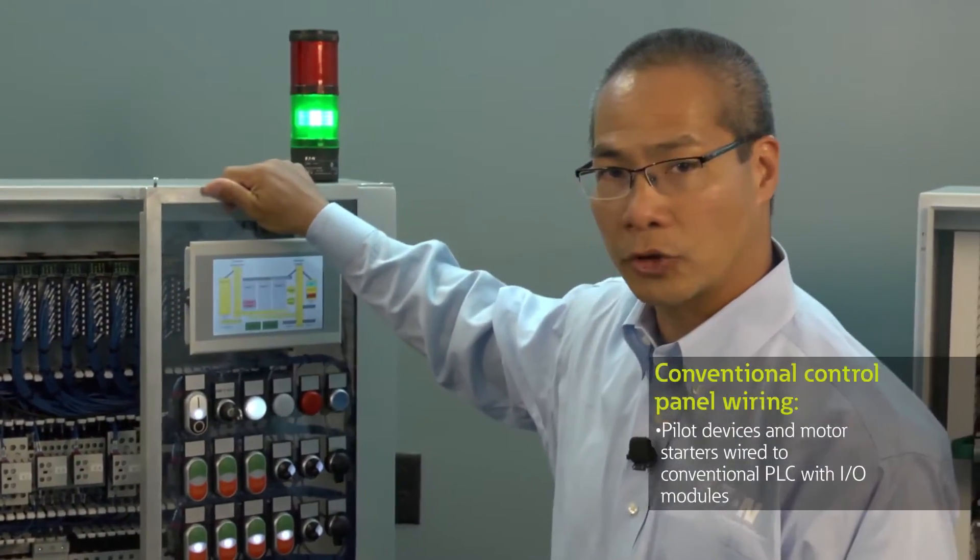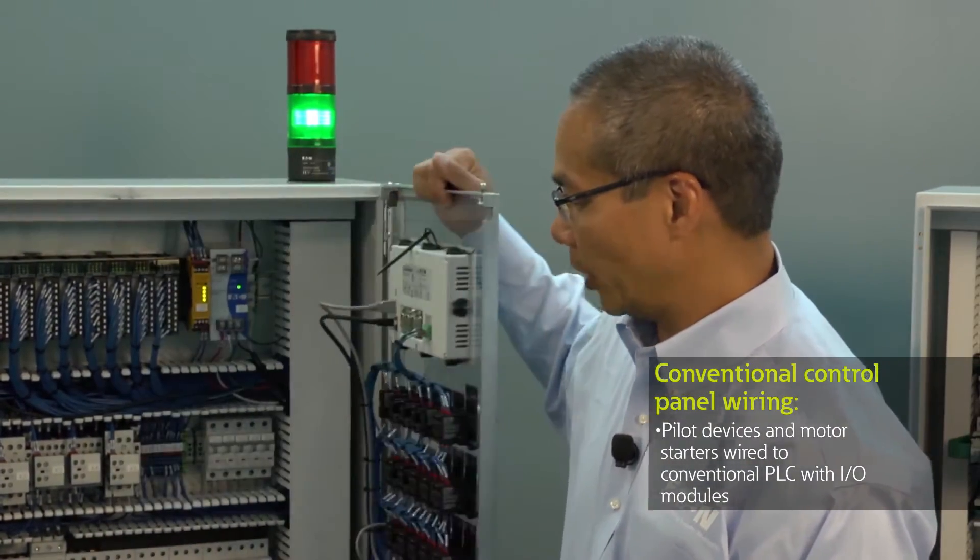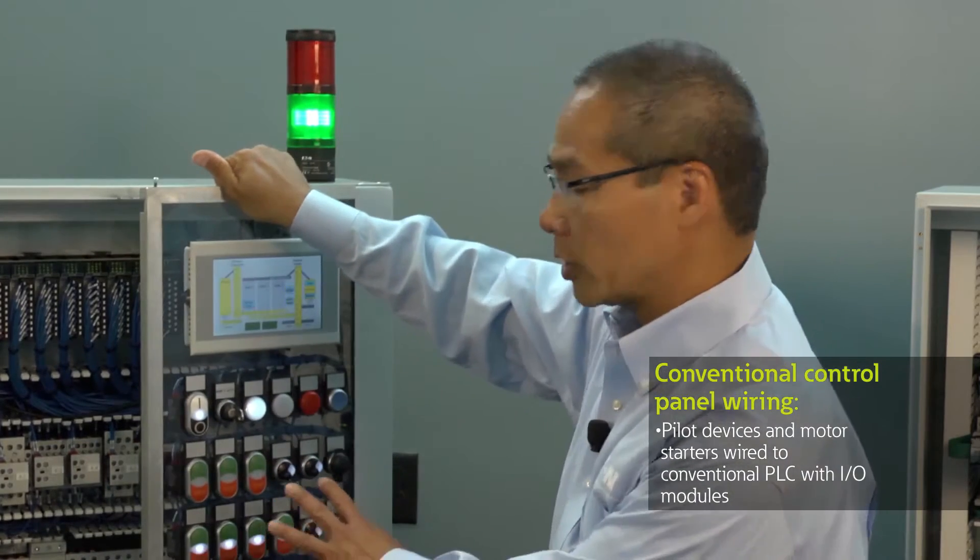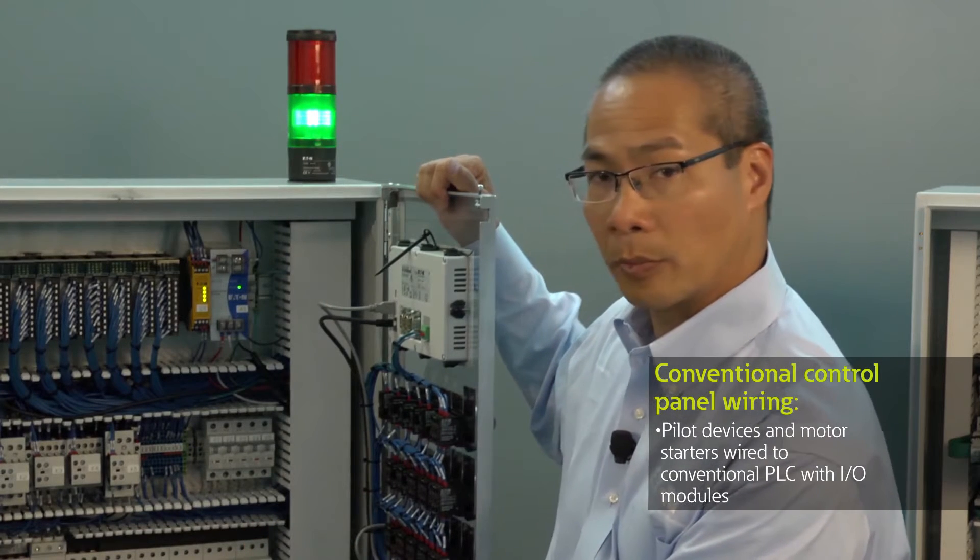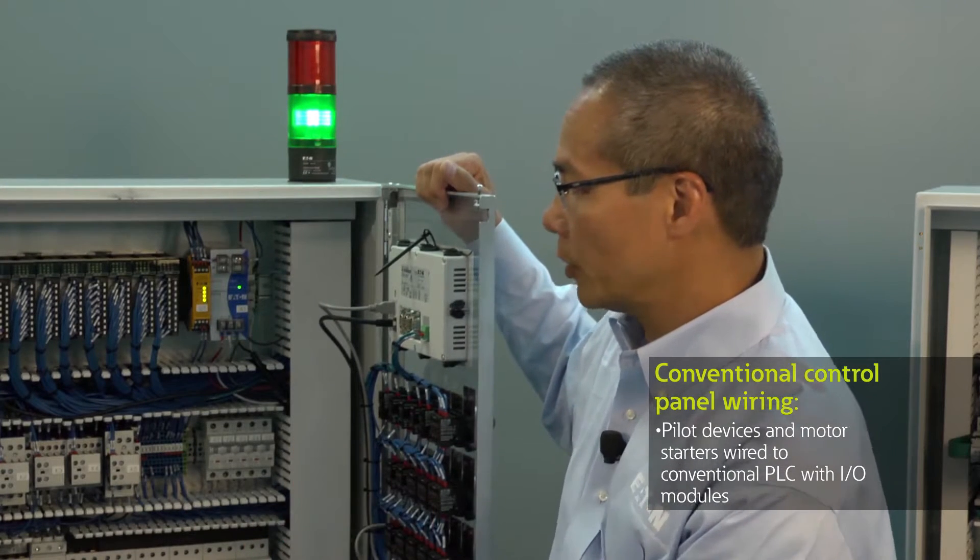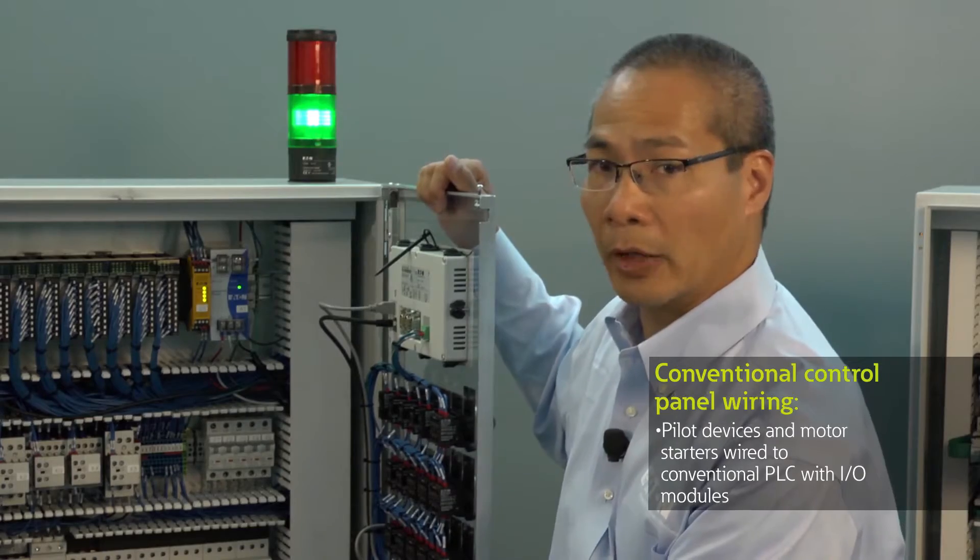Here we have a composite control panel that's been built with push-buttons and pilot light devices on the door. Inside we have motor starters, manual motor protectors, all wired up to a conventional PLC with I/O modules.